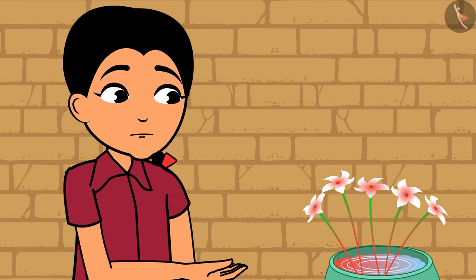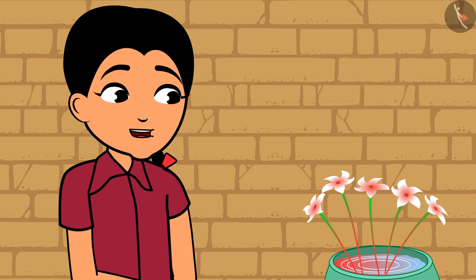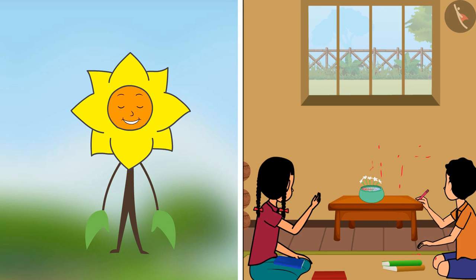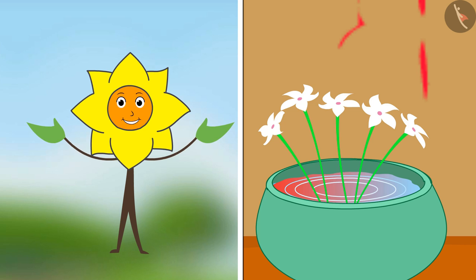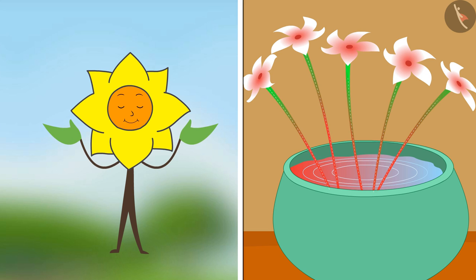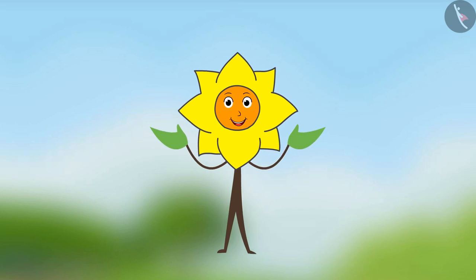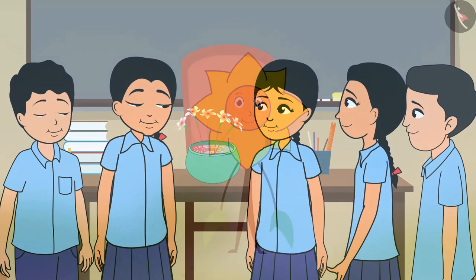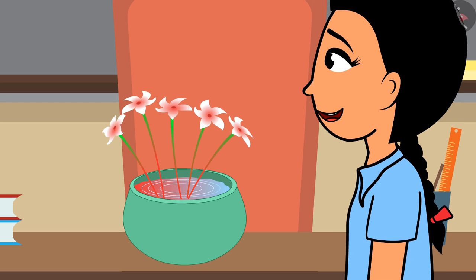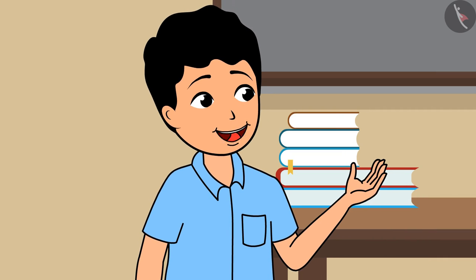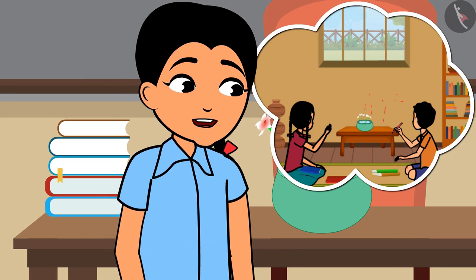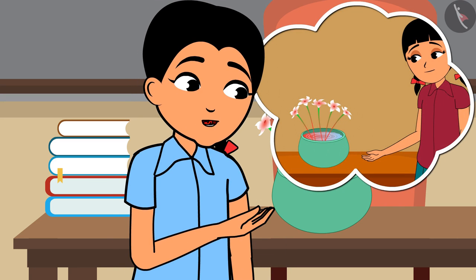Shall we take the flower vase to school and show it to all our friends? Friends, I am sure you are astonished. The ink which leaked from Ramesh's pen got mixed with the water in the vase, because of which the water became red. The whole night, the stems of these flowers kept pulling the red colored water upward. Oh, how have the petals of the white flower become red? Actually, a few drops of red color had dropped in the water in the vase, and by morning the petals and stems had become red.